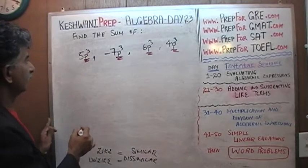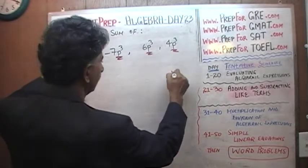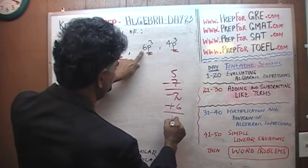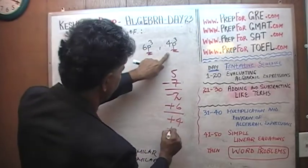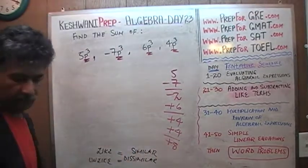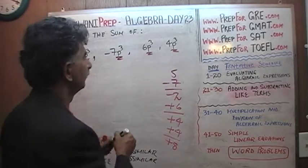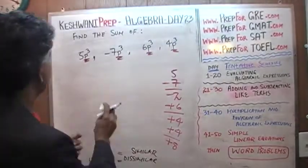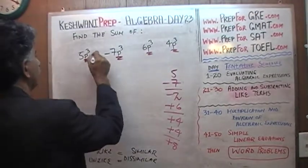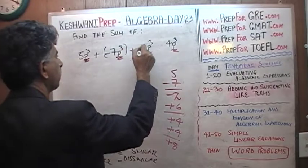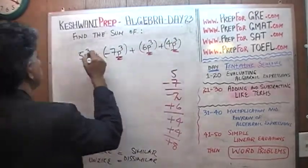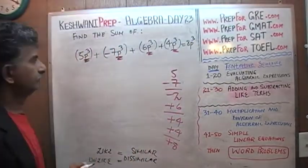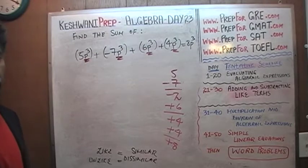All we have to do is add up the exponents. So 5 minus 7 gives us negative 2, then plus 6 gives us positive 4, and plus 4 gives us positive 8. So the answer here is 8p cubed, because they are all like terms.